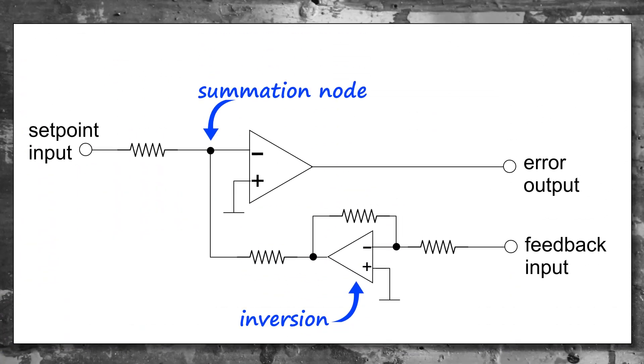So we have the command signal, the set point, the negative feedback, a summator, and an error amplifier. We can translate this into an electronic circuit where the set point input and the feedback join together into a summation node, and then into an operational amplifier that produces the error output. As we've seen, I cannot amplify the error too much because it risks making the whole thing unstable — an oscillating washing machine would soon be jumping all around the room!